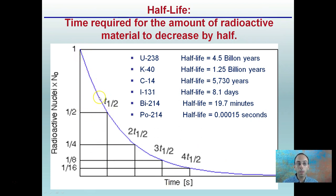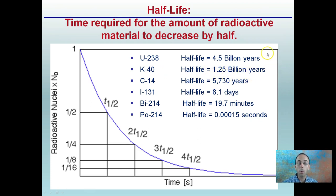The time it takes for half the material to decay for uranium-238 is 4.5 billion years — an extremely long period of time for half of the material to break down. Carbon-14 has a half-life of 5,730 years. Potassium-40 is 1.25 billion years. Not all take a very long time — bismuth-214 has a half-life of only about 19.7 minutes, all the way down to very unstable isotopes that last well under a second. The graph will look the same, but the time scale will be very different depending on the particular isotope.